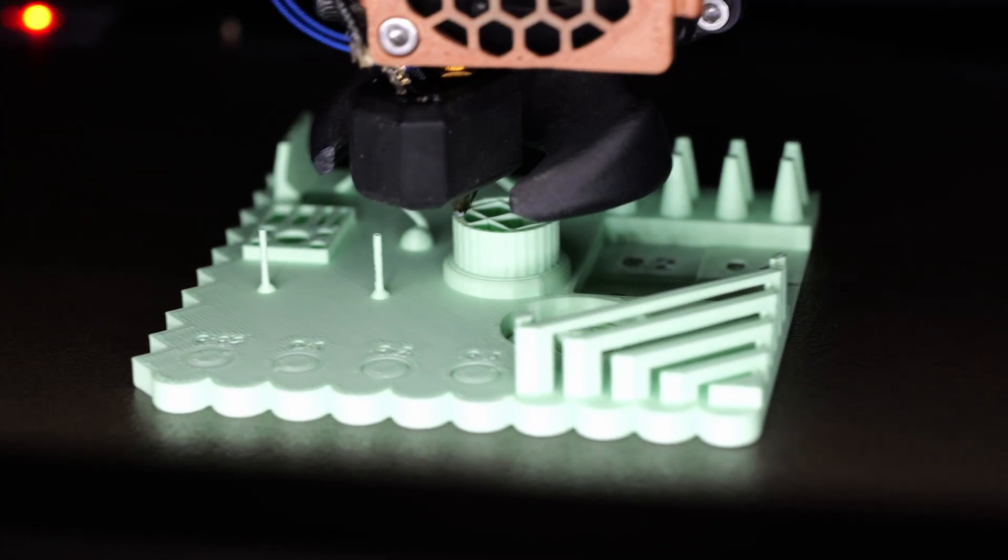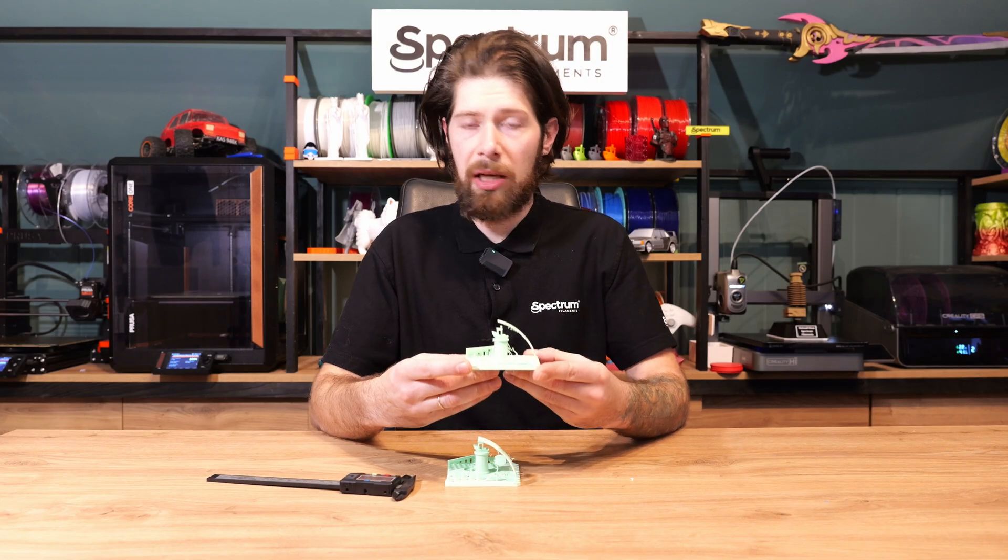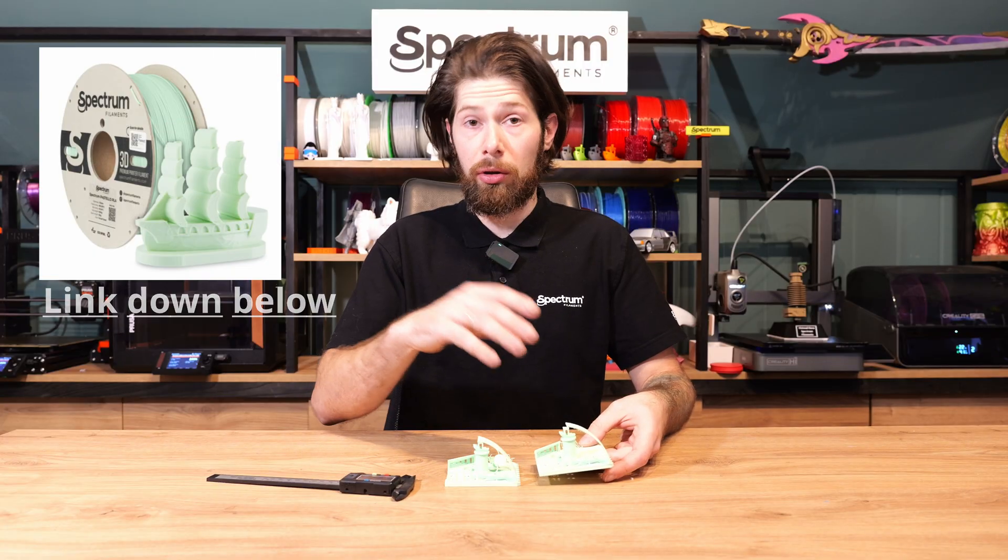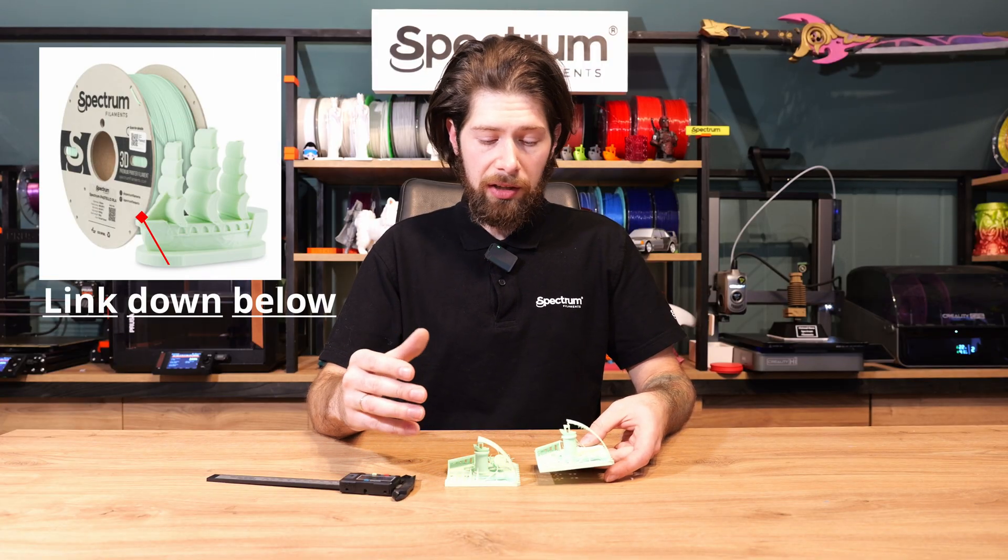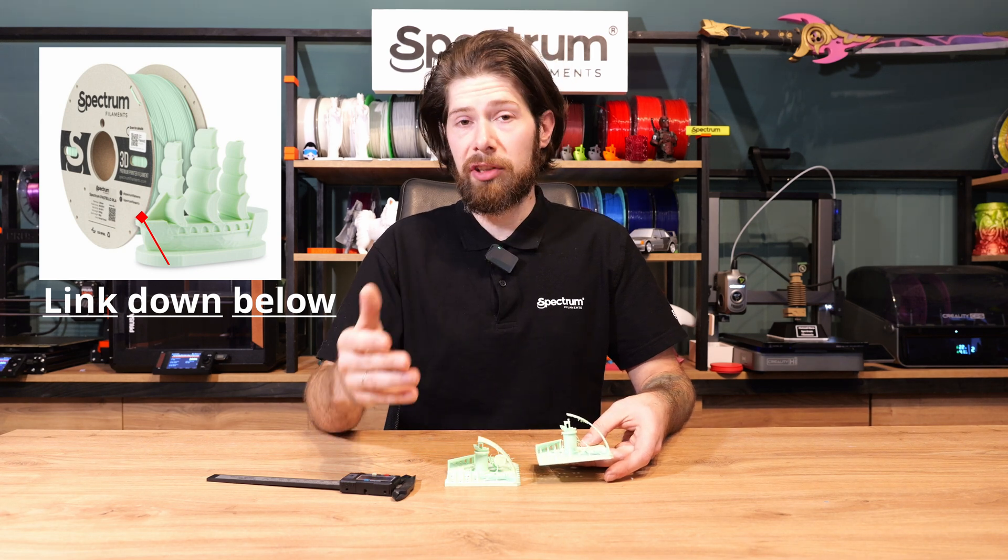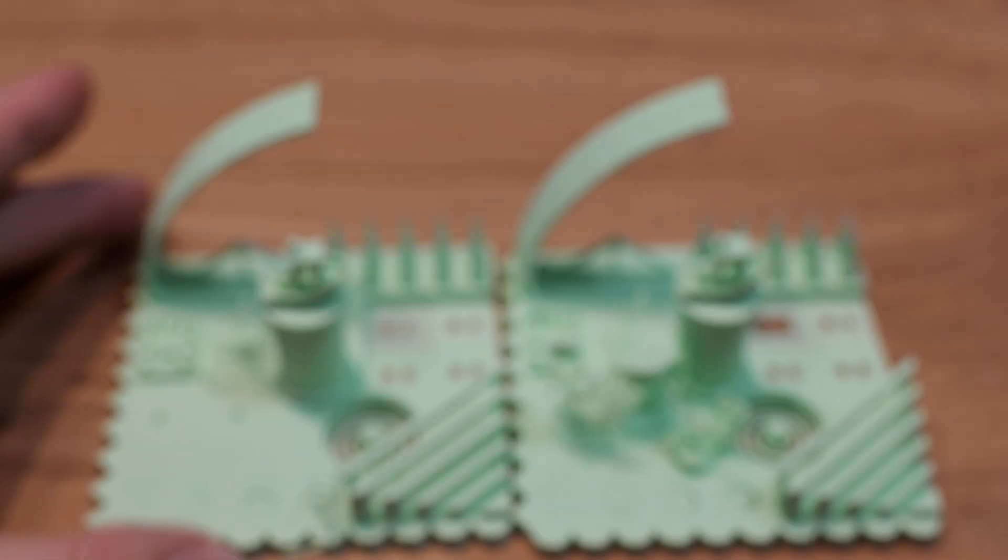Let's take a look at these benchmarks. This first one was printed on Bamboolab A1 and this is the same filament PLA Pastello Cocktail Green from Spectrum Filament so we can see all the features and defects from two different printers.